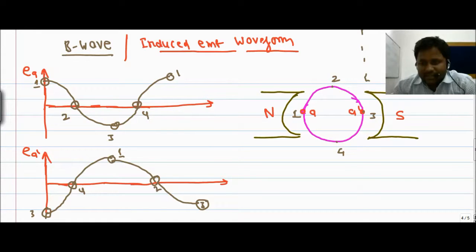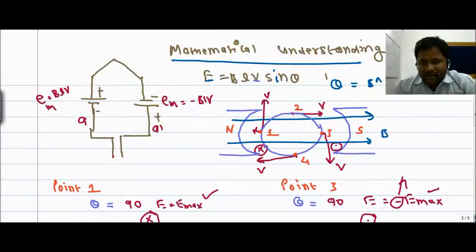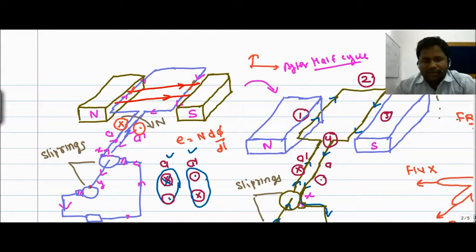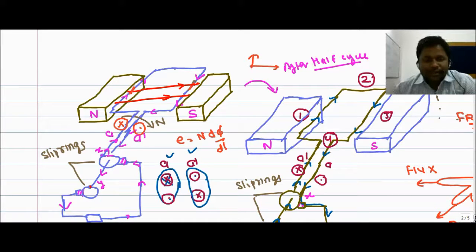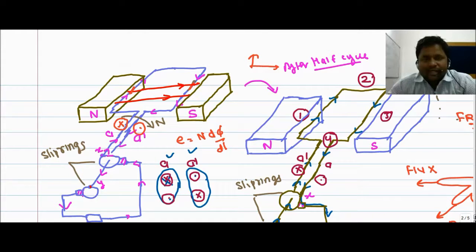This is the basic waveform of the induced EMF when conductors are operating in a constant magnetic field. The EMF induced is always alternating in nature. Whenever the conductor crosses the zero axis, its polarity should be reversed. In a constant magnetic field, EMF induced is always alternating in nature — this is the basic operation we have understood.